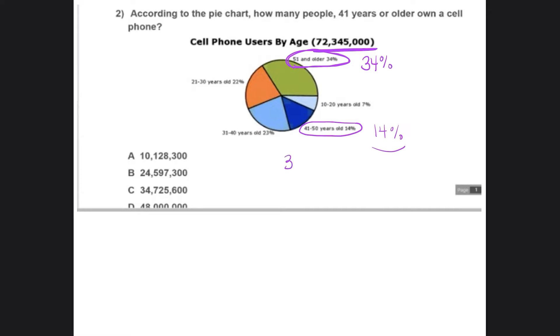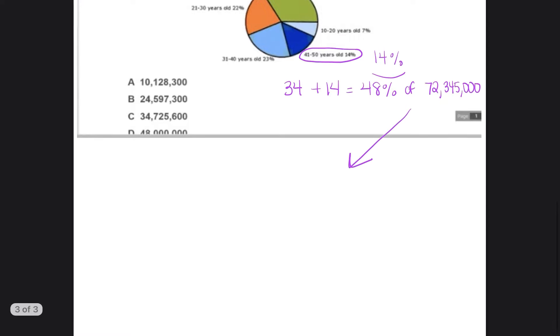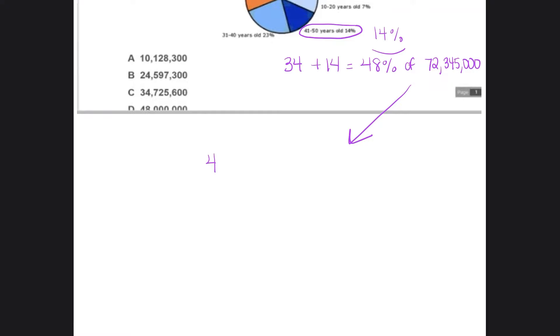So what we have to do is we have to add 34 plus 14, which is equal to 48%. And we're trying to find 48% of the total. So 48% of 72,345,000. All right, so I'm going to kind of transfer this over so that we can have some more space to work on this problem.